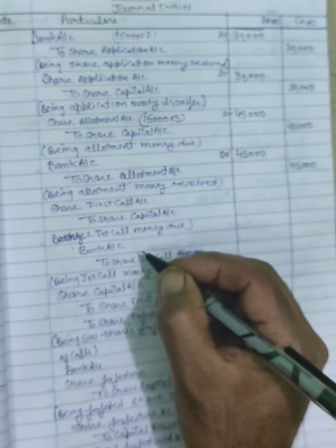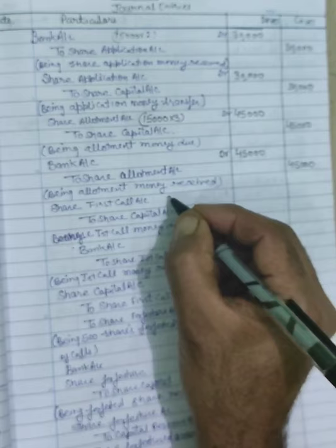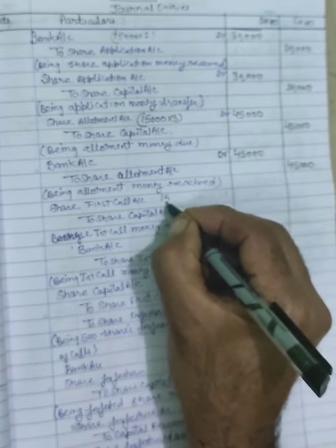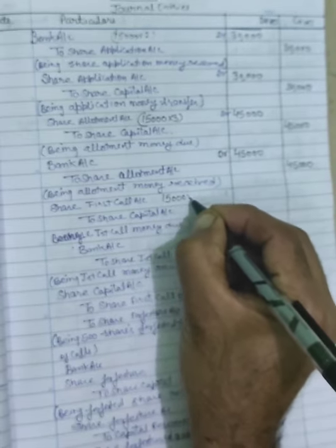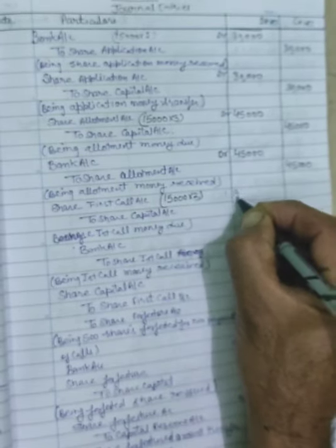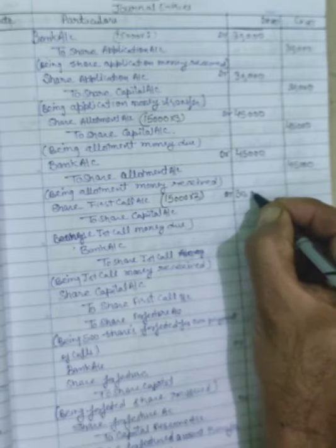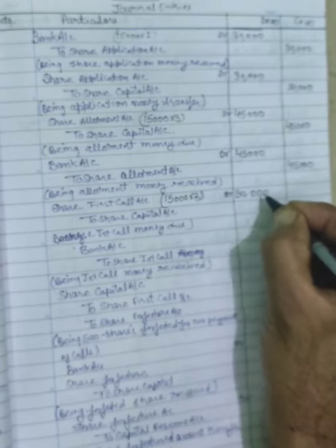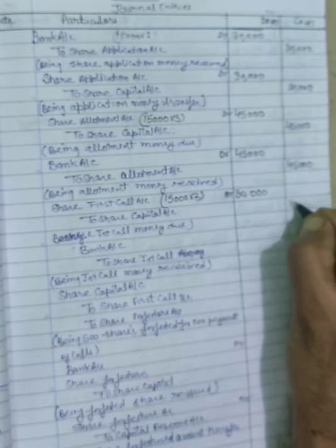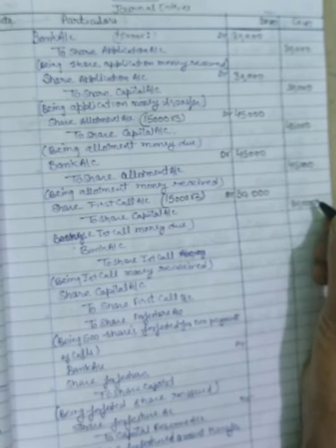First call due: Share first call account debit to share capital. 15,000 shares at the rate of Rs.2 per share = Rs.30,000 and Rs.30,000. Narration: being first call money due.